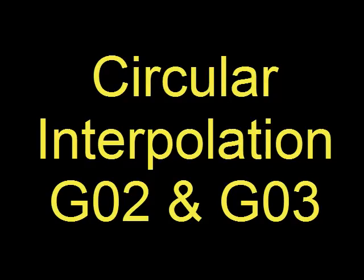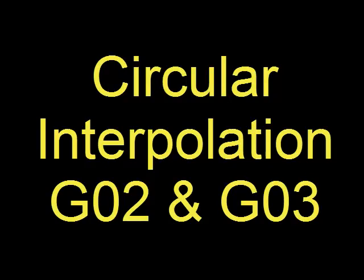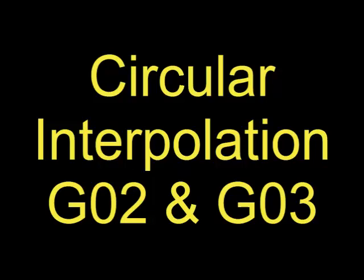Moving on to more complex G-codes, G02 and G03 allow us to cut arcs. G02 is used for clockwise arcs, and G03 creates counterclockwise arcs. Using these codes is a little bit more difficult because not only do you have to specify the endpoint of the arc, but you also have to specify the center point of the arc.